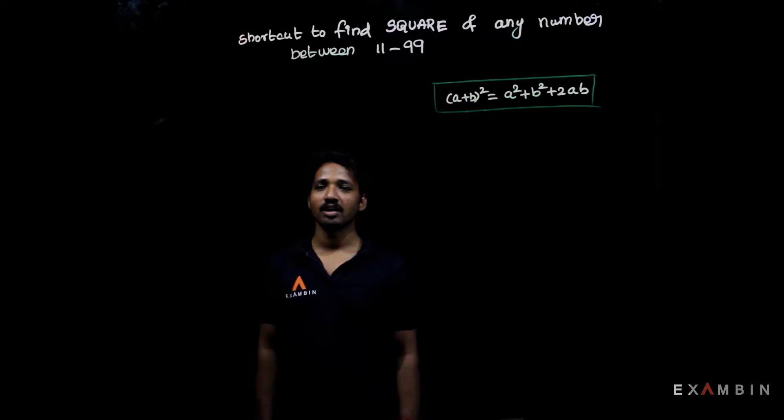Friends, now we are going to see how to calculate square value for any number between 11 to 99 in just 3 to 5 seconds.